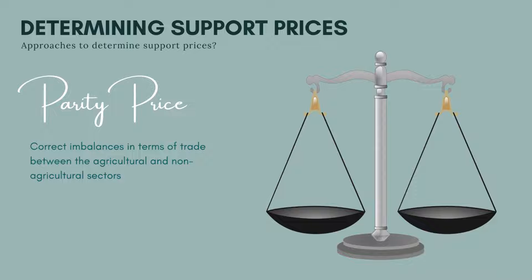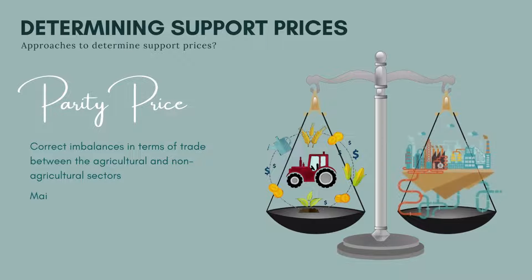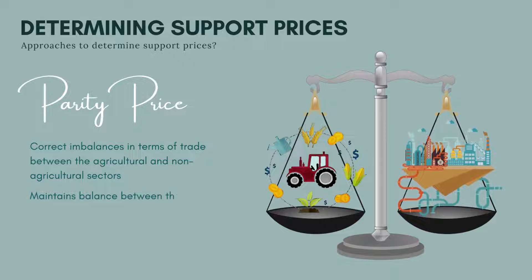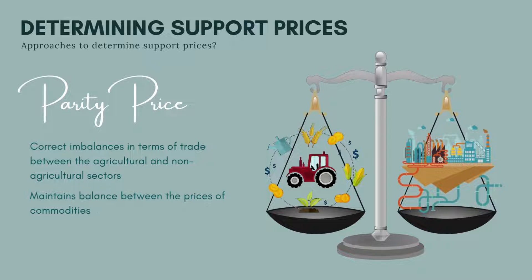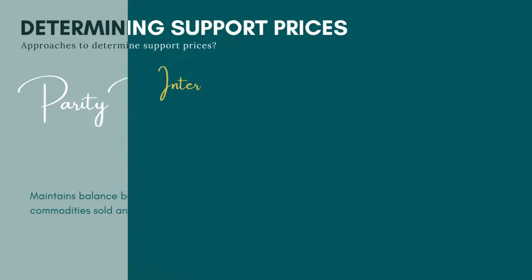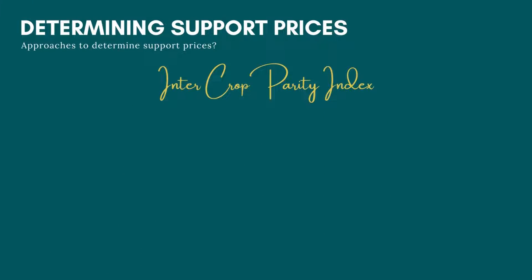The second method is the parity price, which is used to correct imbalances in terms of trade between agricultural and non-agricultural sectors. The parity price is an output price that will yield income which can buy the same quantity of other products as it would in some specified base period, maintaining the balance between prices of commodities sold and purchased by farmers.